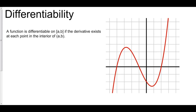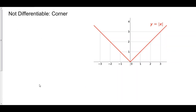A function is said to be differentiable on any interval from a to b if the derivative exists at each point in the interval from a to b, not including a or b. Now, when does the derivative not exist? Well, there are a few cases — four to be exact. The first case is a corner.